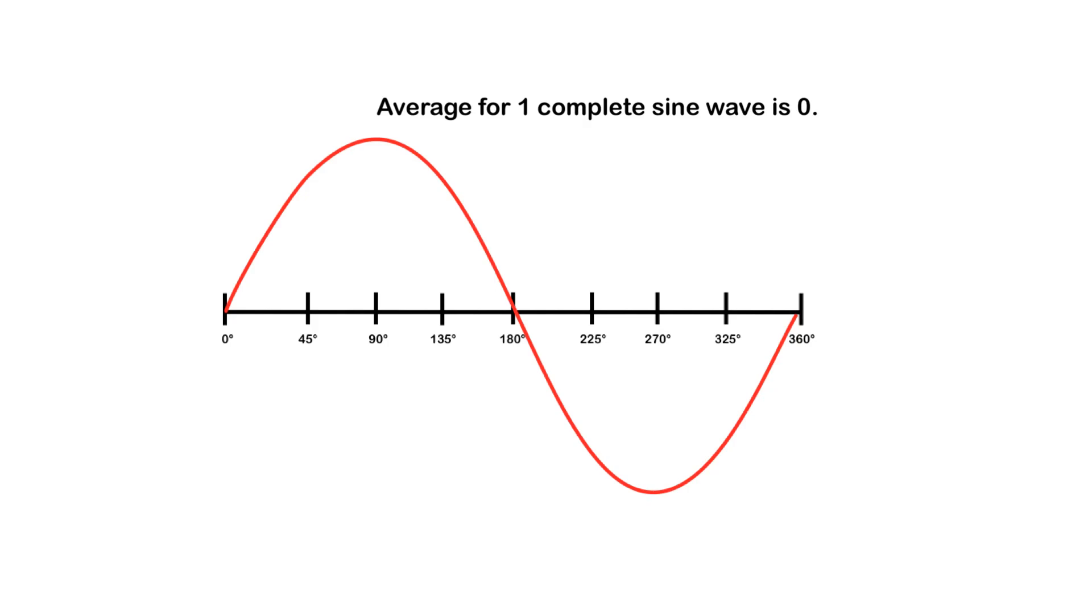Now, if we take a look at this, we see that we have a positive alternation, which would be going from 0 to 180 degrees, and a negative alternation going from 180 to 360 degrees. We talked about peak values. Well, the peak value on the positive is equal to the peak value in the negative, but there would be a negative function to that.